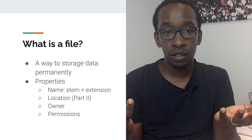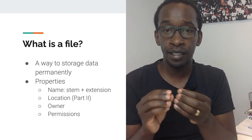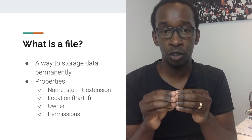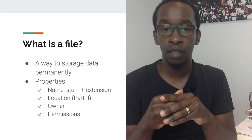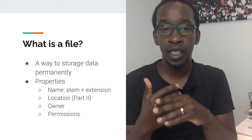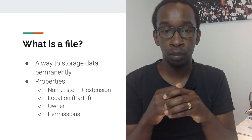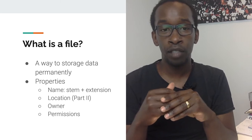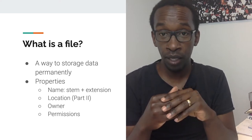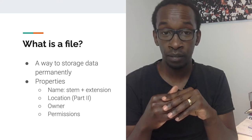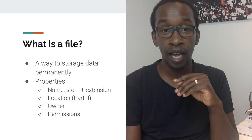Files have certain properties. A file has a name — split into two parts: the stem and the extension, separated by a period. For example, `image.png` has stem `image` and extension `png`. The location is where the file resides on the file system. Every file has an owner, which doesn't necessarily have to be a human — it could be a process running on your operating system.